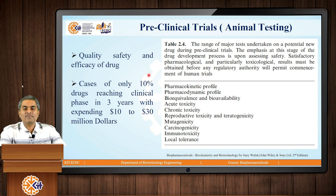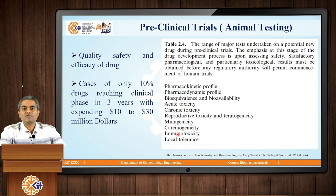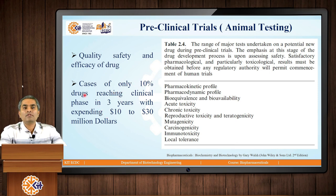Now let us talk about further approaches. What is done in the preclinical trials? Preclinical trials are animal testings. In this case of drug testing, people go for pharmacokinetic and pharmacodynamic profiling, toxicity of the drug, mutagenicity of the drug, and immunotoxicity of the drug — all these methods are tested in animals. There are different animal models available, starting with rats and mice, till monkeys. There is one real case reported: only 10% of the drugs out of all the drugs discovered in the library will reach the clinical phase after successfully passing the preclinical trials.